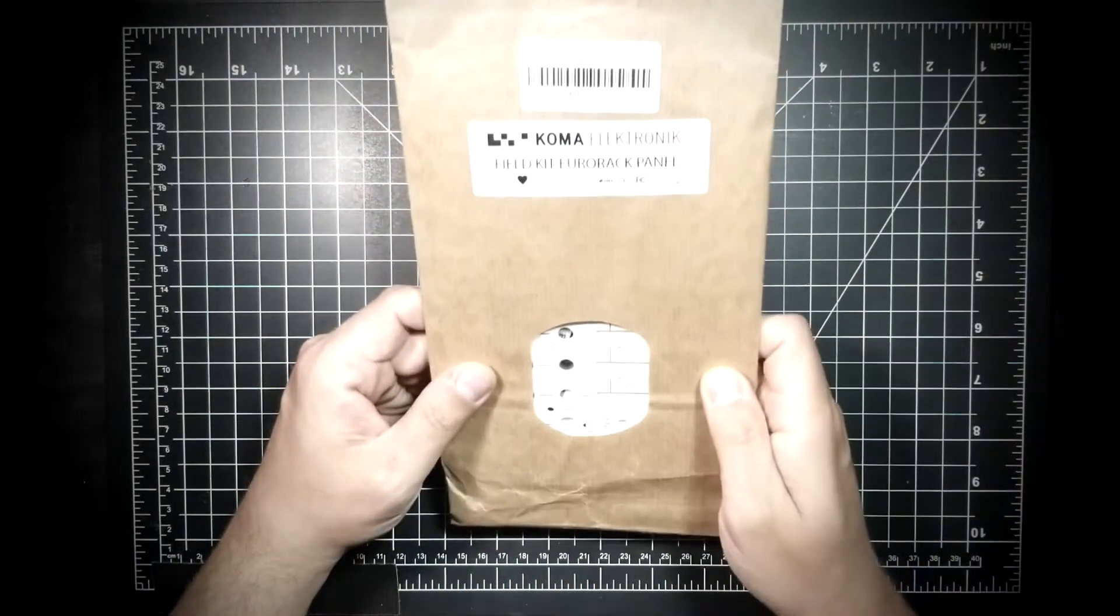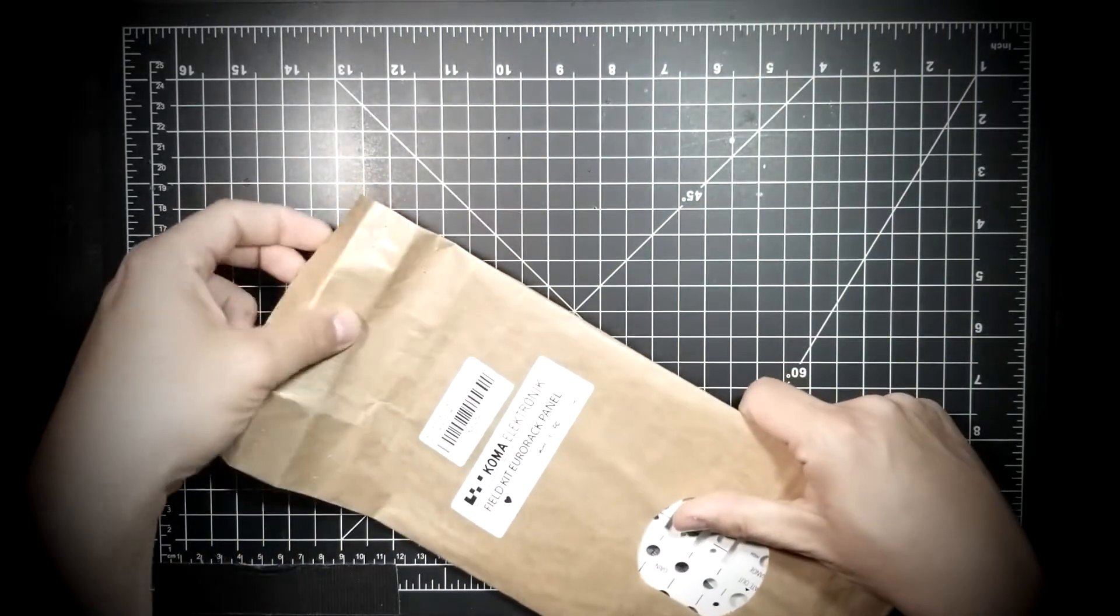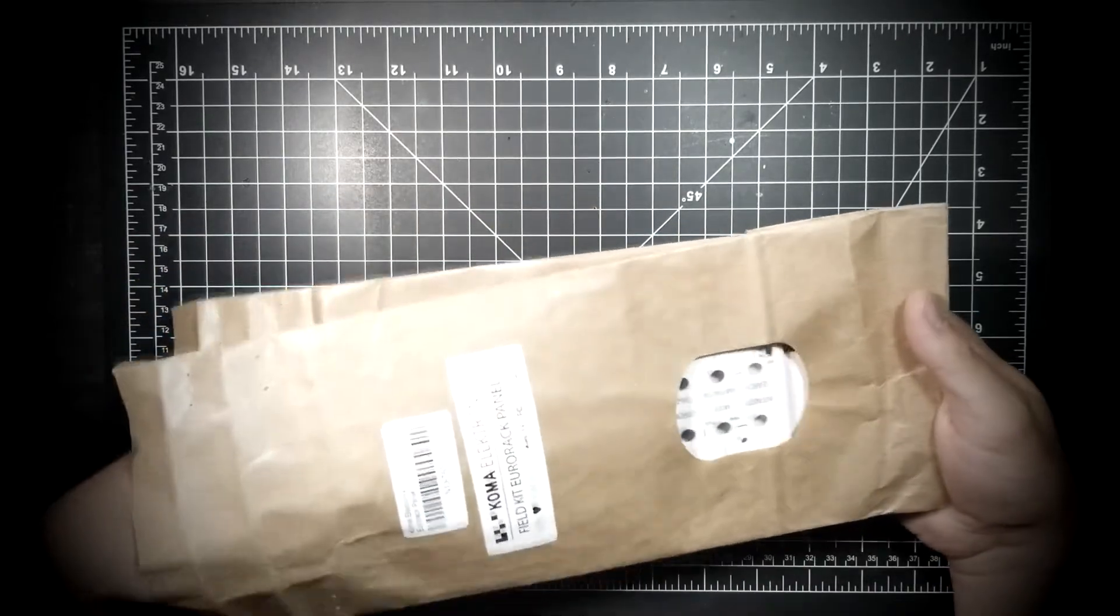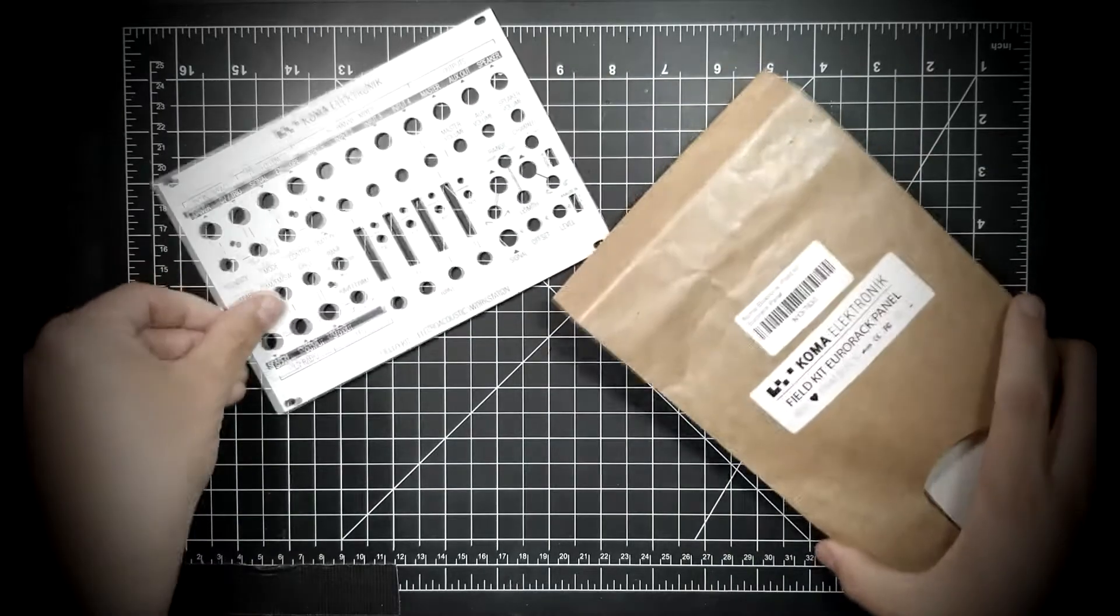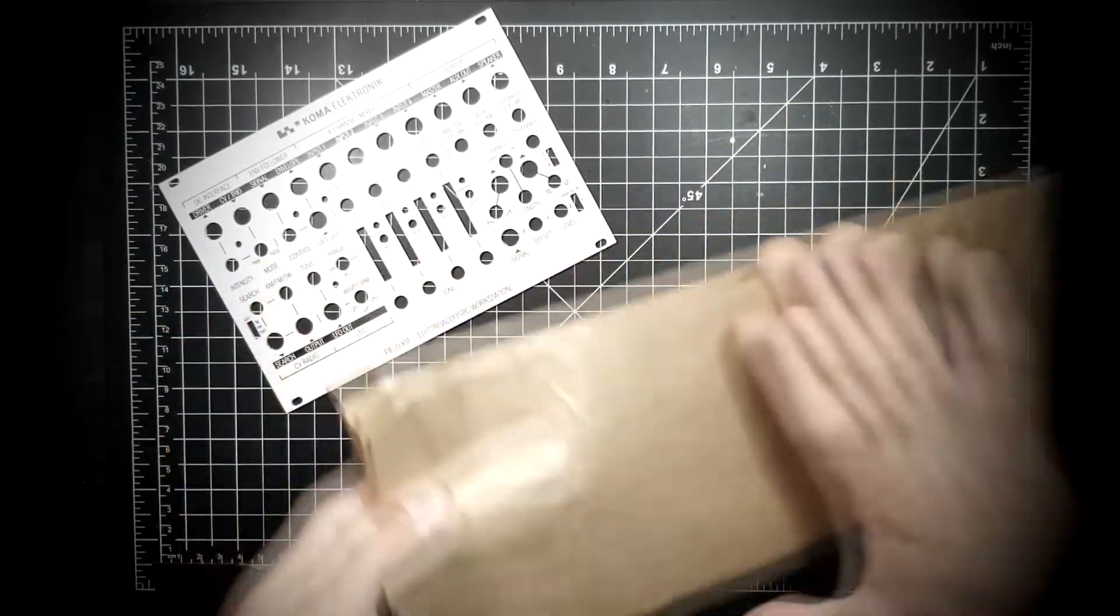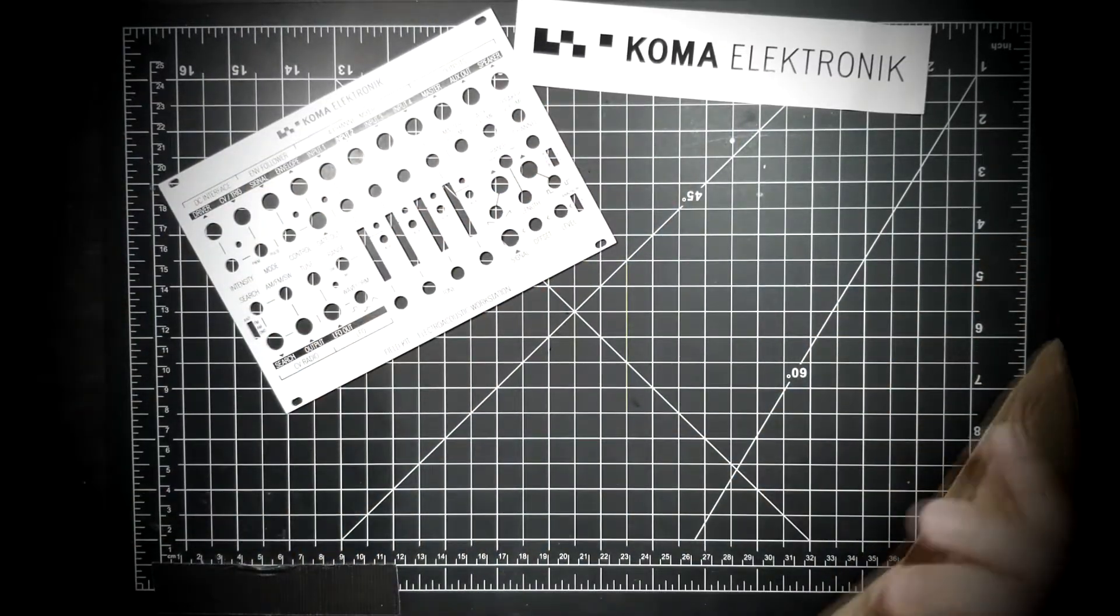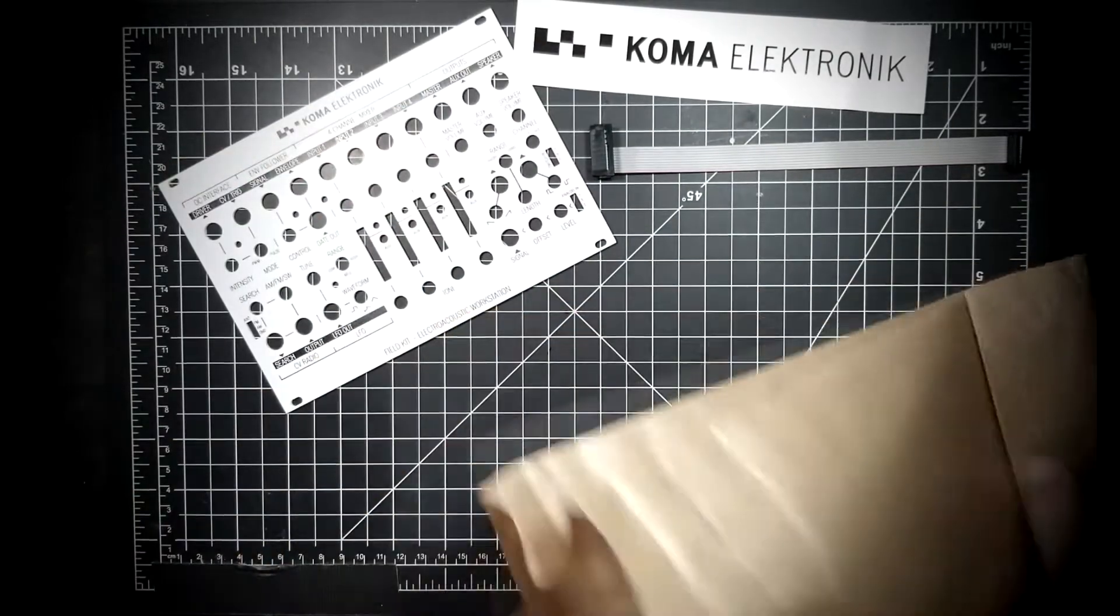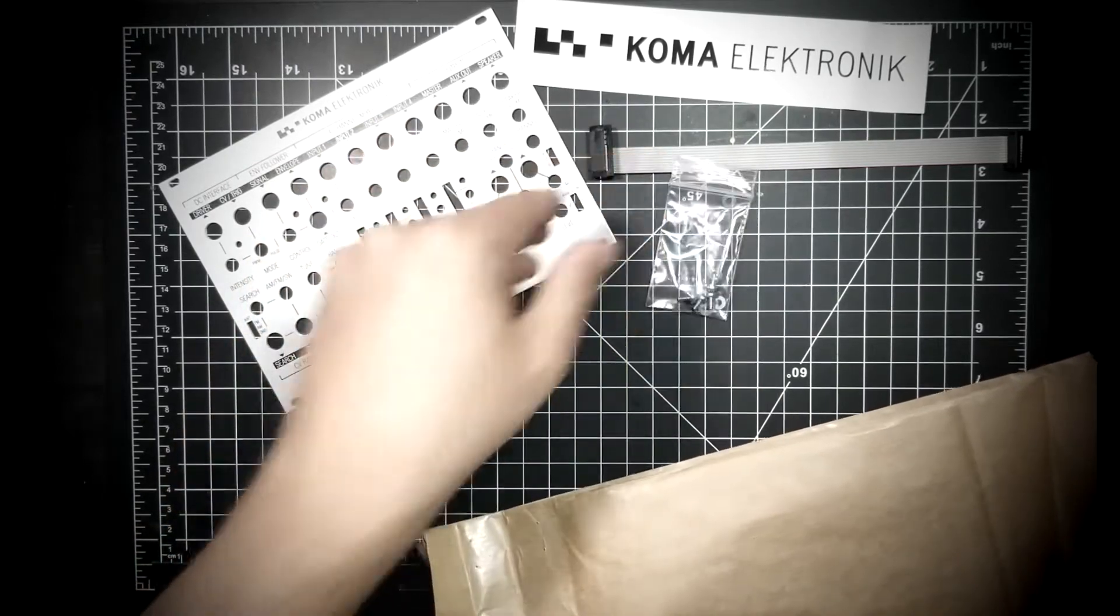So first of all, this is how the front panel comes. This kind of nice, almost like brown lunch bag. People often get nostalgic about things like video games and music, which I do as well, but there's something nostalgic in my life about brown paper bags. So yeah, here is the panel. Inside, there are a few bits. Sticker, of course. Power cable for your modular system, which will be required. And some mounting screws and washers. That's always appreciated.